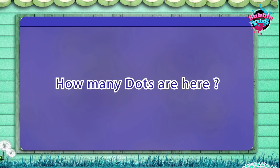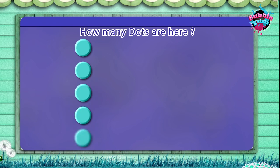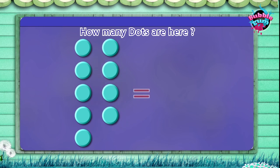How many dots are here? One, two, three, four, five, six, seven, eight, nine. Nine.